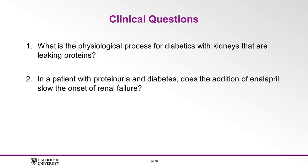Here's the first: What is the physiological process for diabetics with kidneys that are leaking proteins? This question would best be answered by going to the appropriate textbooks. Here's the second: In a patient with proteinuria and diabetes, does the addition of enalapril slow the onset of renal failure? This question is more likely to lead you to the appropriate trials in the journal literature. Note the second question has more specific terminology, which lends itself to the development of a more effective search strategy.